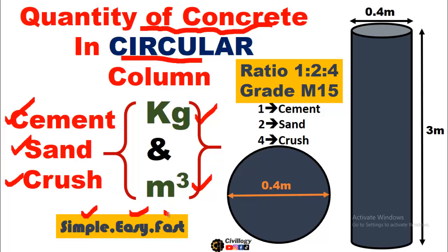In the previous video, we calculated the quantity for a rectangular or square column, the link of which is given in the description. For calculation of concrete, the ratio we are going to use is 1:2:4, which is equivalent to M15 grade concrete having a strength of 15 MPa. Let's start today's topic.